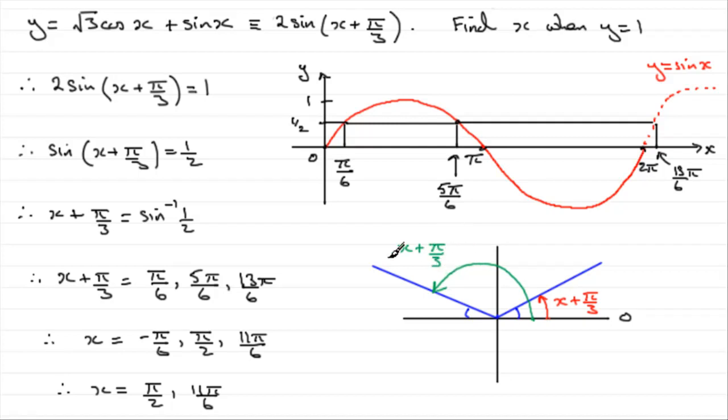Then I would inverse sine a half, making sure I was in radians mode, and we saw that it came out with pi upon 6. So I'd know that this little blue angle here was pi upon 6. And because this blue angle is the same as this one, this one here would be pi upon 6.